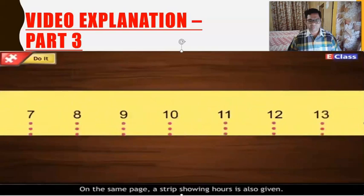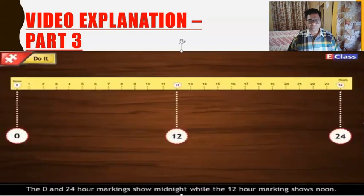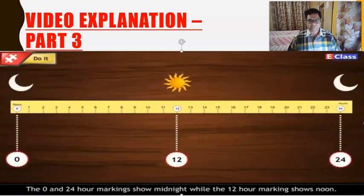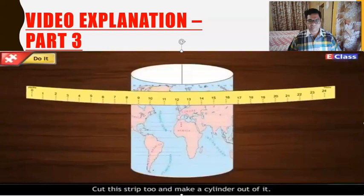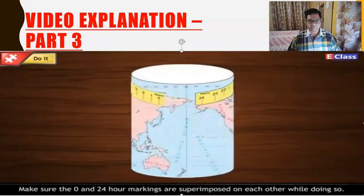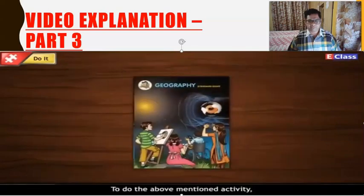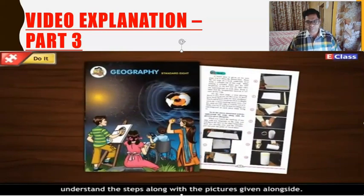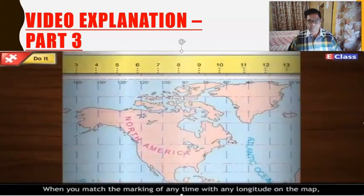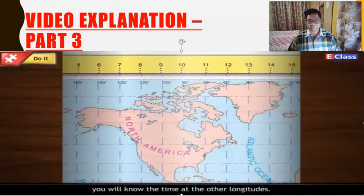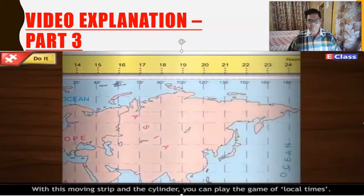Keep in mind that the longitudinal interval is 15 degrees each in this map. On the same page, a strip showing hours is also given. On this strip, 24 hours have been shown with one-hour markings. The 0 to 24 hour markings show midnight while the 12-hour marking shows noon. Cut the strip and make a cylinder out of it — make sure the 0 and 24 hour markings are superimposed on each other. When you match the markings of any time with any longitude on the map, you will know the time at the other longitudes. With this moving strip and the cylinder, you can play the game of local times.